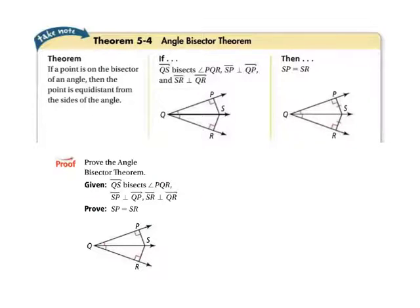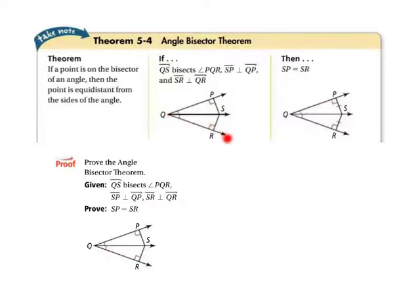The angle bisector theorem states: if a point is on the bisector of an angle, then the point is equidistant from the sides of the angle. So if ray QS bisects angle PQR, segment SP is perpendicular to ray QP, and segment SR is perpendicular to ray QR, then the length of segment SP equals the length of segment SR. Go ahead and have a look at the proof of the angle bisector theorem.